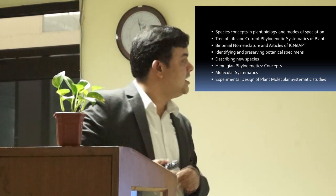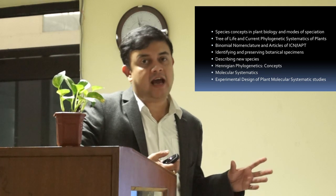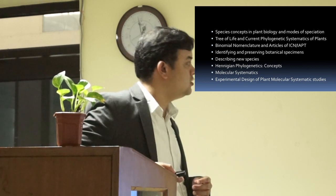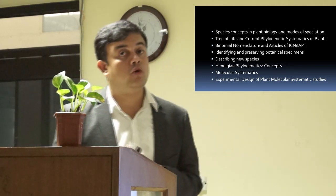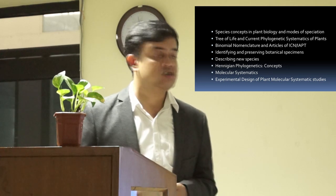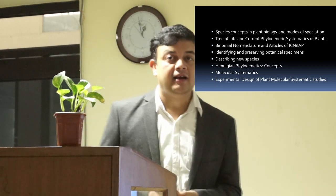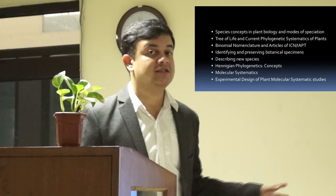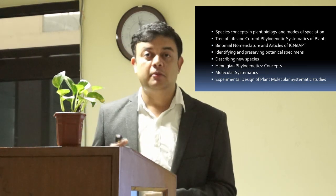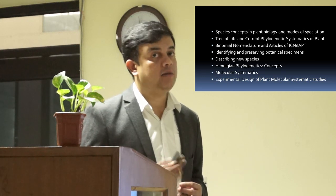So a lot of biodiversity exists to be discovered, and that is work for taxonomists like you and me. I will explain how to formally describe a new species throughout this class. Then comes Hennigian phylogenetics — how the field emerged, and what are the theory and concepts behind phylogenetics. I will also explain what molecular systematics is all about and what methods are used. Finally, we will explain how to design a plant taxonomy or plant molecular systematics study — the experimental design of taxonomic studies — a field that is totally lacking coverage in most syllabi, though it is extremely relevant.